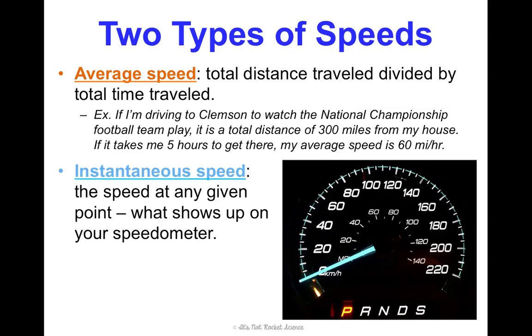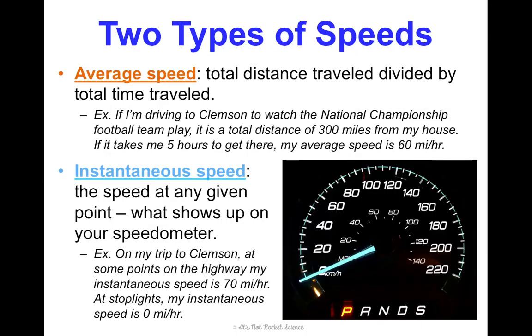Now, this is different from instantaneous speed, which is the speed at any given point. This is what shows up on your speedometer when you're driving, like in this picture. So, on my trip to Clemson, sometimes I'm on the highway, and my instantaneous speed is able to be 70 miles per hour. But sometimes on my trip, I get stopped at a stoplight, and then my instantaneous speed is 0 miles per hour. So, that's just the difference. They're still calculated the same, but just in terms of what I'm referring to, average speed is just overall, and instantaneous is at that exact instant, how fast am I going.